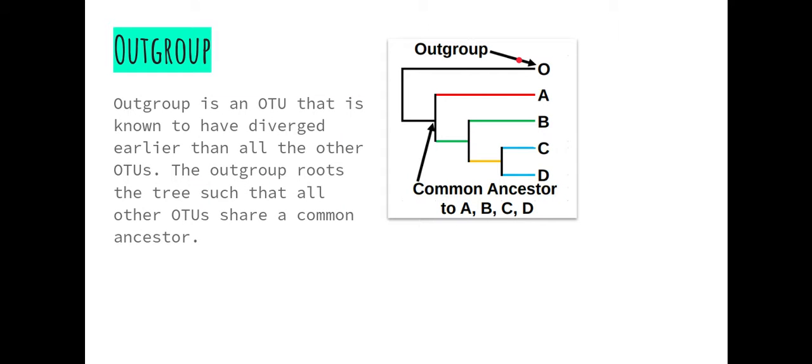The outgroup is the OTU that diverged earlier than the other OTUs and it acts as a root for the tree as it is the most common ancestor of all the OTUs in the tree.